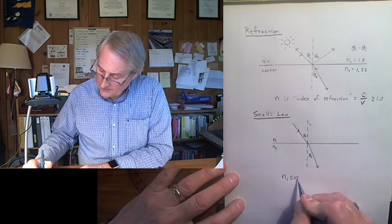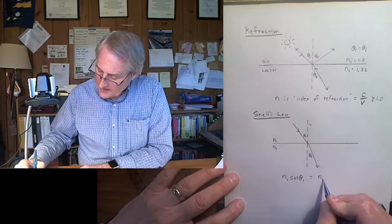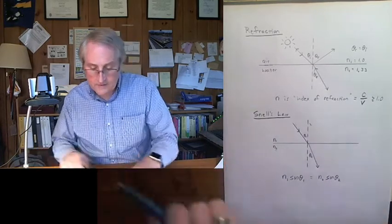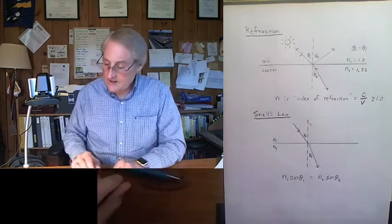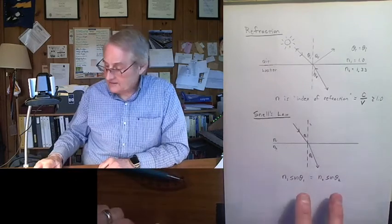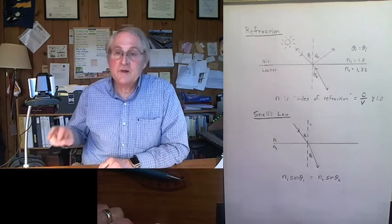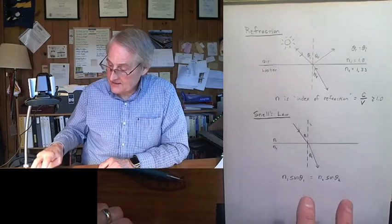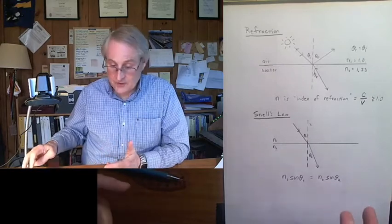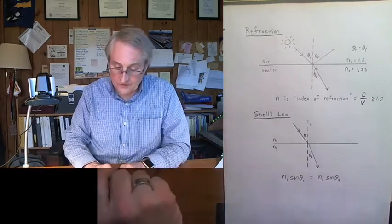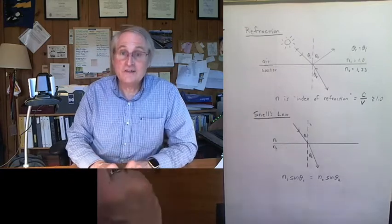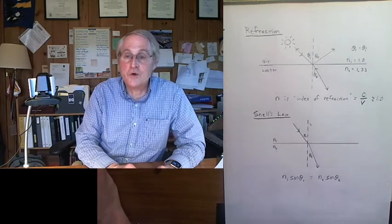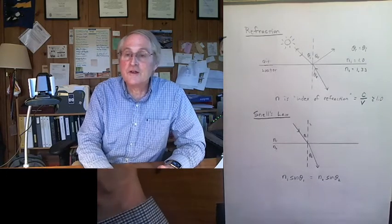n1 times the sine of theta 1 is n2 times the sine of theta 2. So one of the things that you can do in this experiment is plot the data to confirm in a way that confirms that this actually holds, that it really is true. You can test Snell's law. We can do more than just test that. We can actually extract some information from it. But one of the goals of the experiment is to confirm Snell's law.